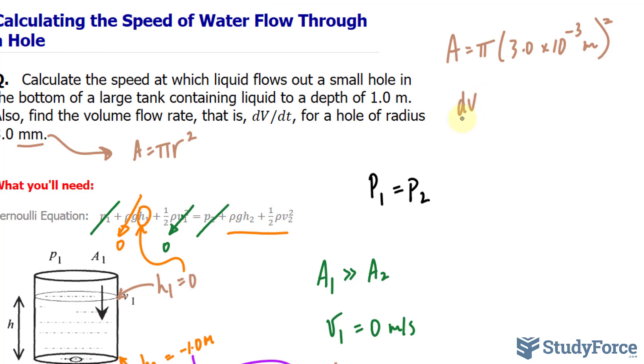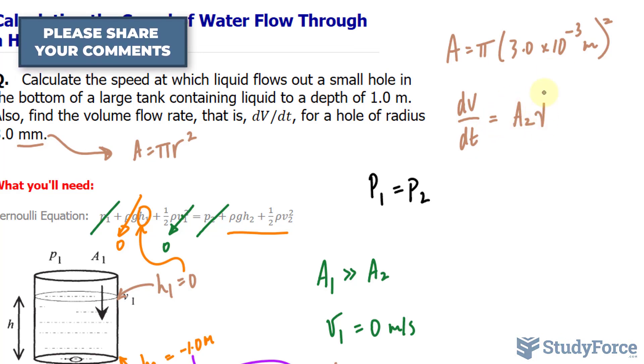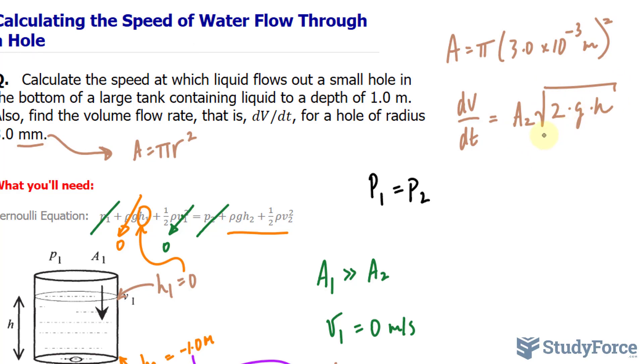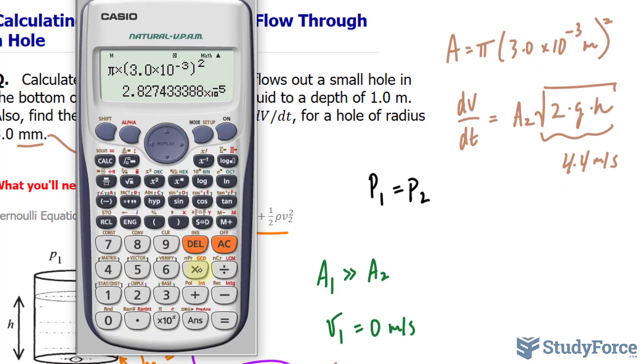So I'll write this down as dV over dt is equal to the area. That's the area at the bottom. Multiply to 2 times g times h. And we found this to be 4.4 meters per second. And the area we found on our calculator being that value.